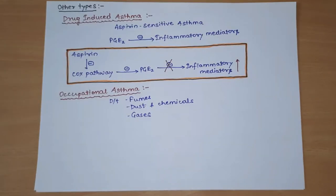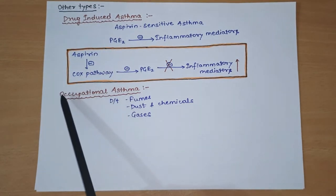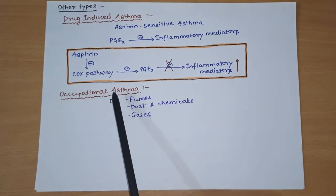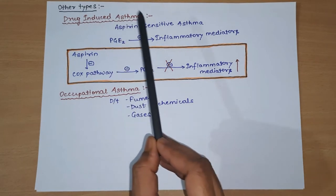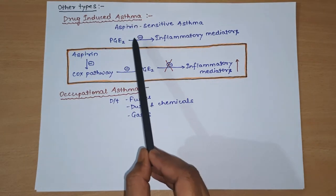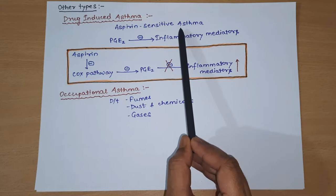We will briefly discuss two other types of asthma: drug-induced asthma and occupational asthma. Drug-induced asthma - the most common example is aspirin-sensitive asthma.